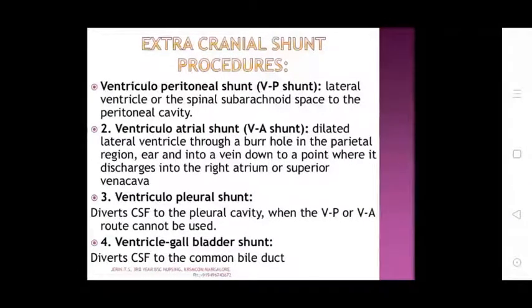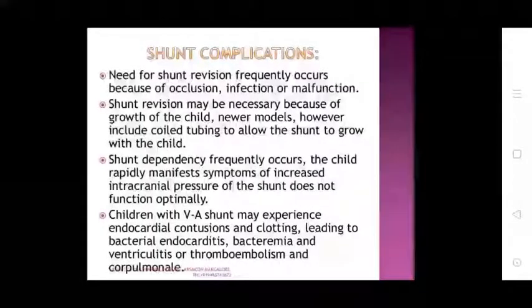Extracranial shunt procedures: ventriculoperitoneal (VP) shunt — from the lateral ventricle through the spinal subarachnoid space to the peritoneal cavity. Ventriculoatrial (VA) shunt — dilated lateral ventricle via a burr hole in the parietal region, with a tube passed into the vein down to the right atrium and superior vena cava. Ventriculopleural shunt diverts CSF to the pleural cavity when the VP and VA routes cannot be used. Ventriculogallbladder shunt diverts CSF to the common bile duct.